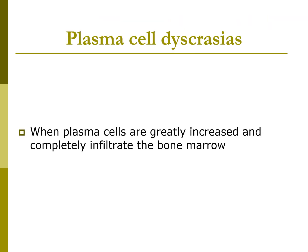Let's talk about plasma cell dyscrasias — basically a fancy word for disease. When plasma cells are greatly increased and completely infiltrate the bone marrow, this is called a plasma cell dyscrasia. Some examples would be multiple myeloma or Waldenstrom's macroglobulinemia.